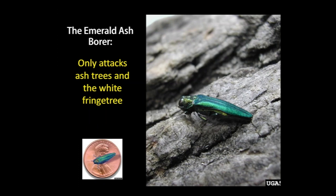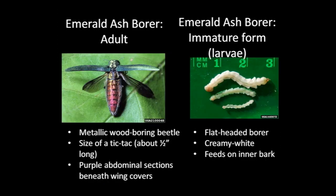The emerald ash borer is a wood-boring beetle about a half inch long — it can fit inside a penny. The wings are a brilliant metallic green with a bright purple abdomen. The adults are active for only two weeks after they emerge from the D-shaped exit hole and feed on the leaves of the ash tree. They'll mate, and then the female will lay about 40 to 100 eggs on the bark. The eggs hatch and the immature stage tunnels through the bark and starts feeding underneath in the inner bark layer called the phloem, cutting S-shaped channels which disrupt the flow of nutrients and cause branches to die one by one.